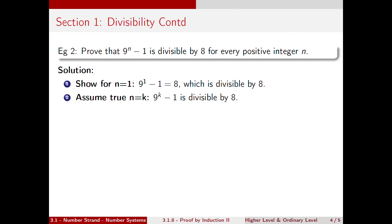Our next step is to assume that it's true for n equal to k. So we assume that 9 to the k minus 1 is indeed divisible by 8, and again we will use this fact for step 3.